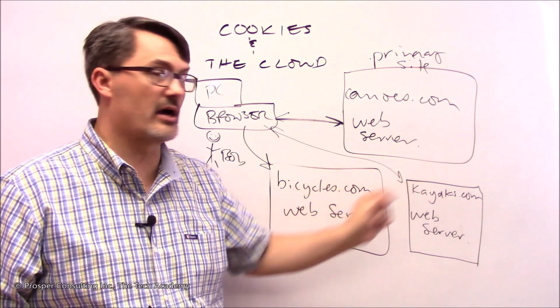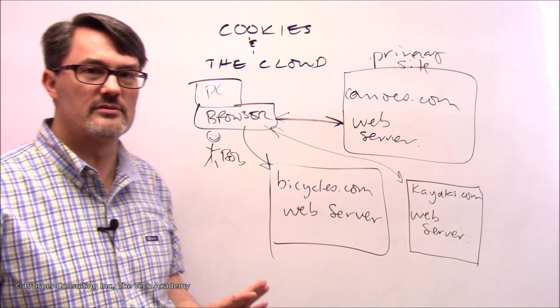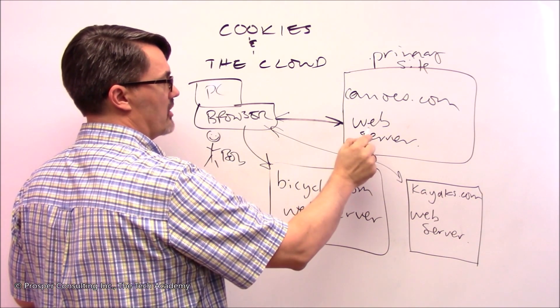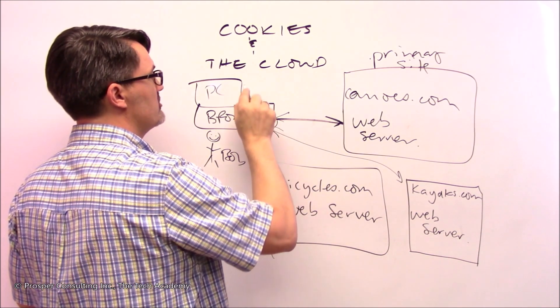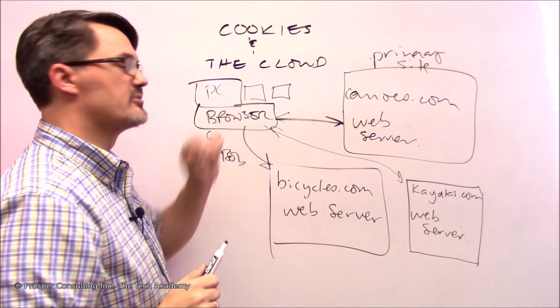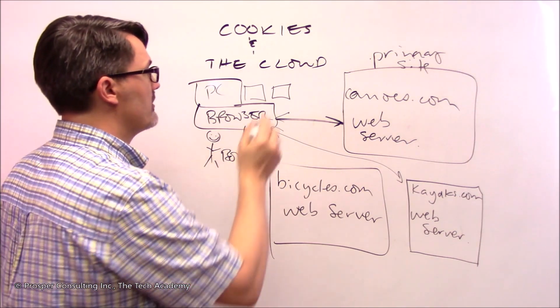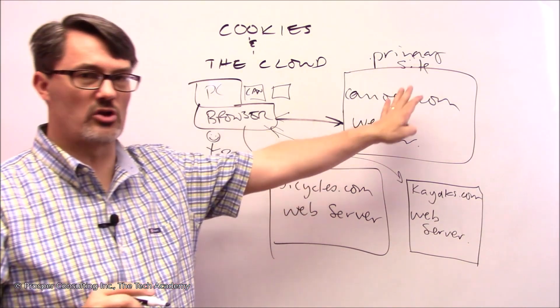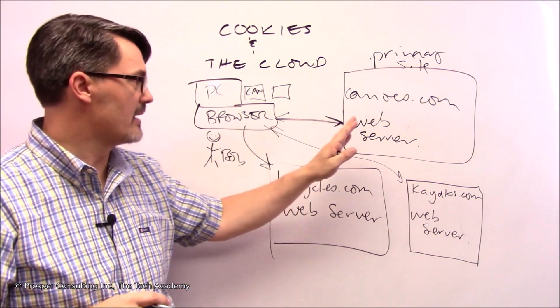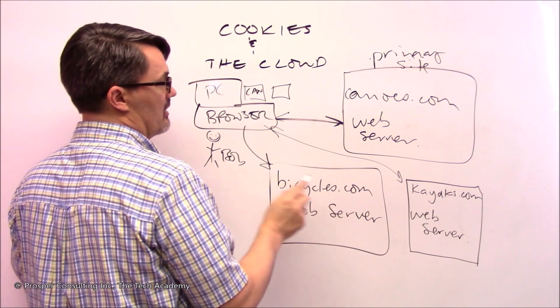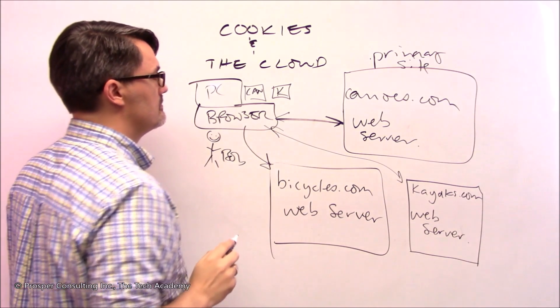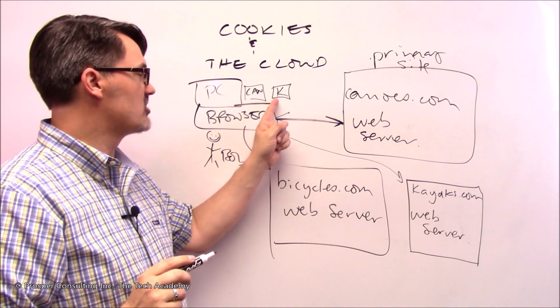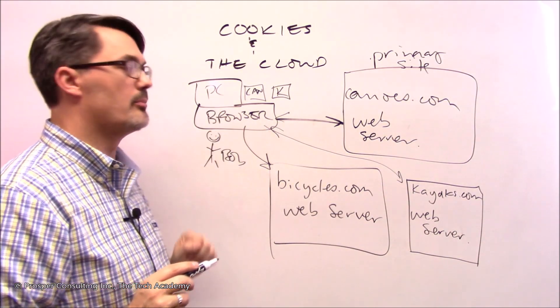Let's say that the website kayaks.com has learned that it's really smart to find out who visits canoes.com, because people who buy canoes buy kayaks. They work an arrangement out with canoes.com that when Bob visits canoes.com, canoes.com sends two cookies onto Bob's computer. One is the canoes.com cookie used for whatever it needs for its own internal operation. The other one is actually a cookie for kayaks.com, and that cookie contains code that will let kayaks.com know that Bob browsed.